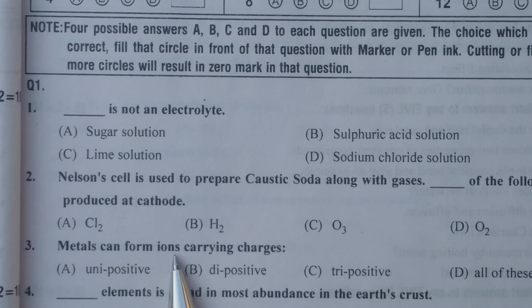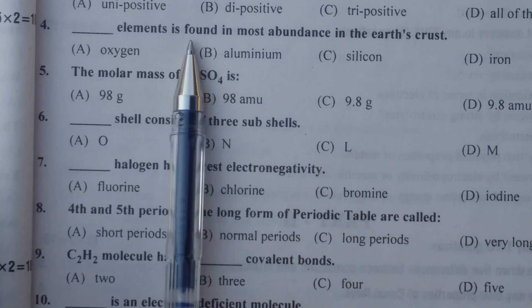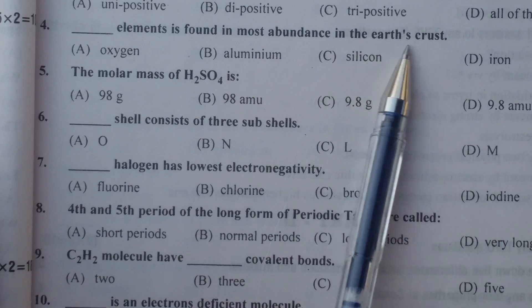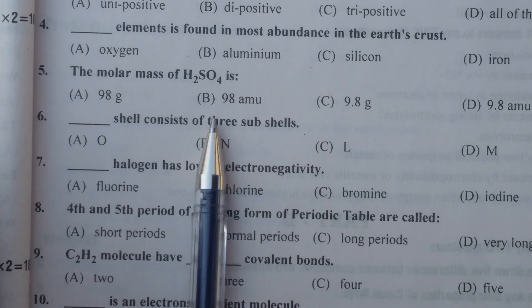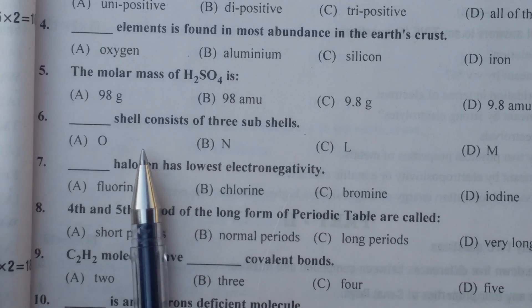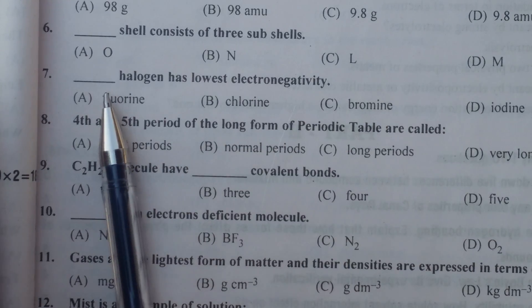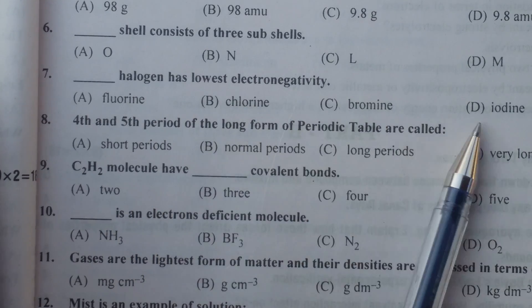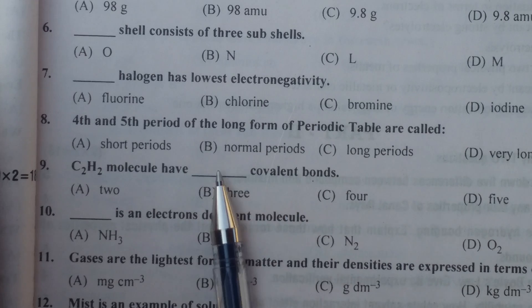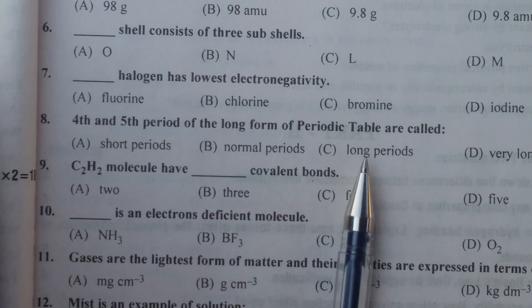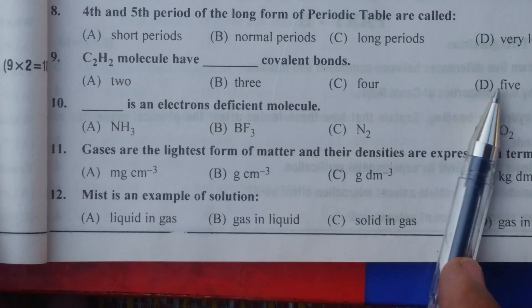Metals can form ions carrying charges, all of these. Which element is found most abundantly in the earth's crust? Oxygen. The molar mass of H2SO4 is 98 grams. Which cell consists of three subshells? M shell. Which halogen has the lowest electronegativity? Iodine. Fourth and fifth periods of the long form of periodic table are called long periods. C2H2 has five covalent bonds.